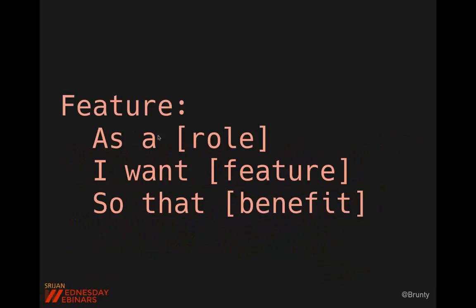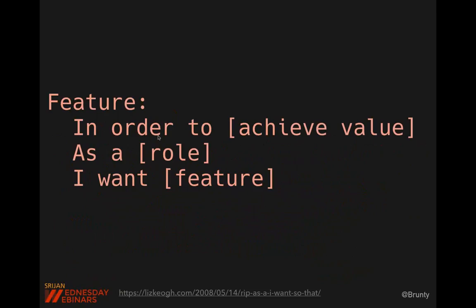Liz Keogh specified a better way to write it: 'in order to achieve value, as a role, I want feature.' By putting the value first rather than last, subconsciously that's the first thing we think about when we think about this feature. The 'in order to achieve value' part is the key for developers — it keeps the business value front of mind.